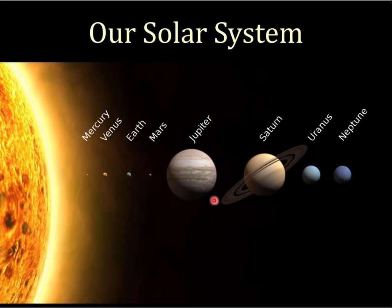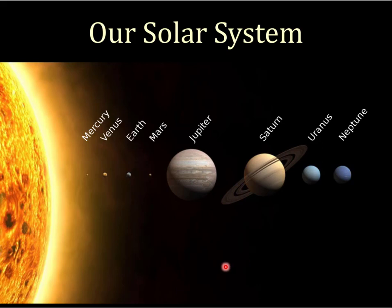There might be an Earth-sized rock at the center of Jupiter, but even if there is, that's not nearly all of Jupiter. These planets are made out of things other than rock, and when we talk about them we'll discuss what they are made of — it's really fascinating.